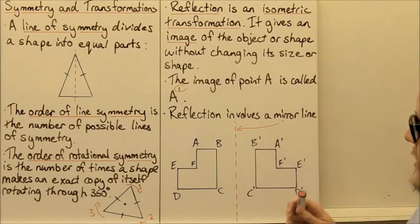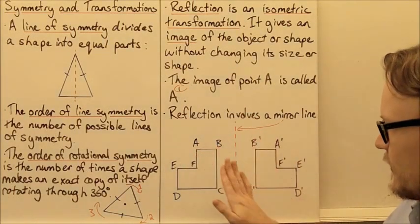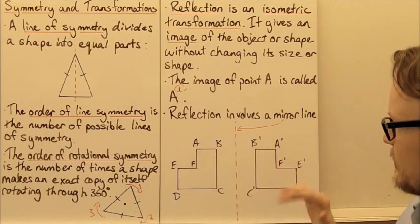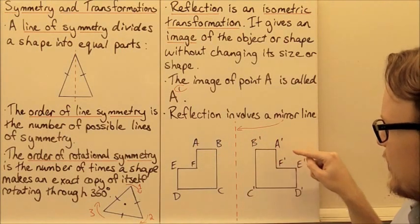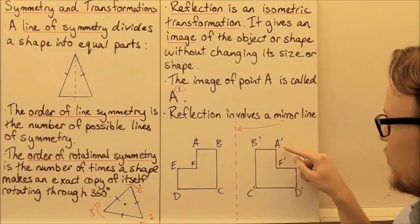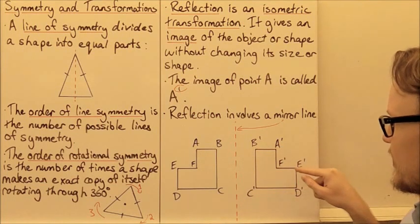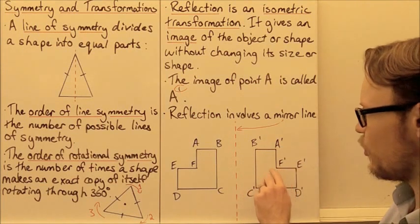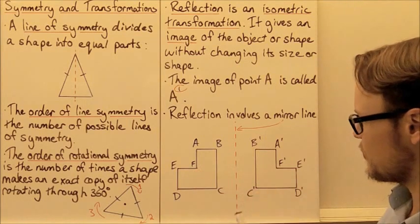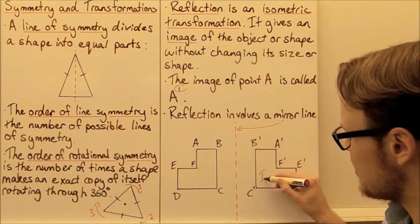We can see that each of the points is reflected about this mirror line. So each of our vertices — A dash, B dash, C dash, D dash, E dash, F dash — has its corresponding point. This here is our image.